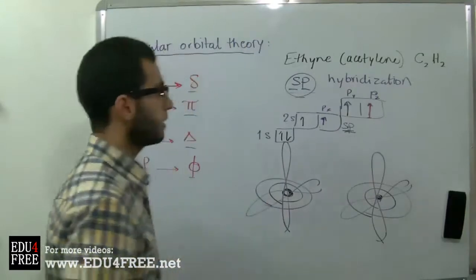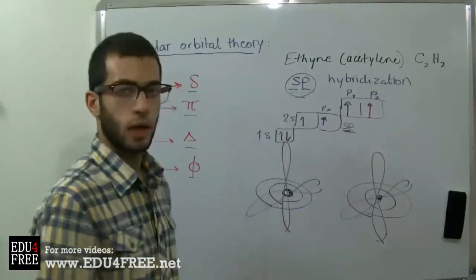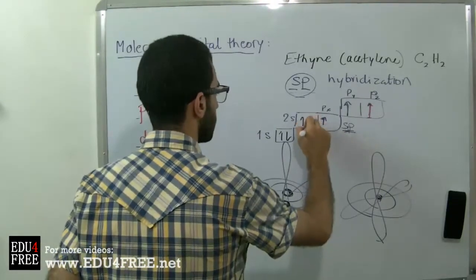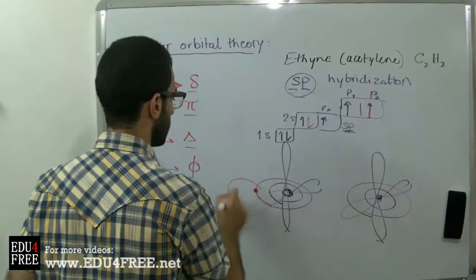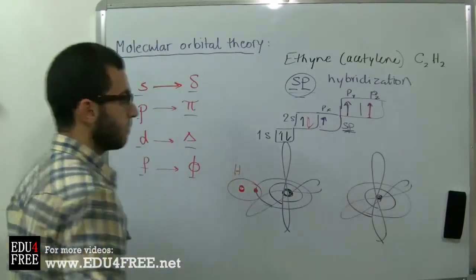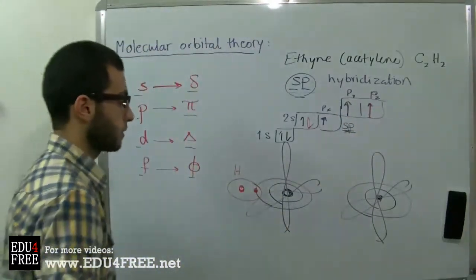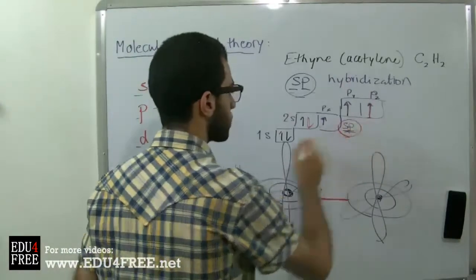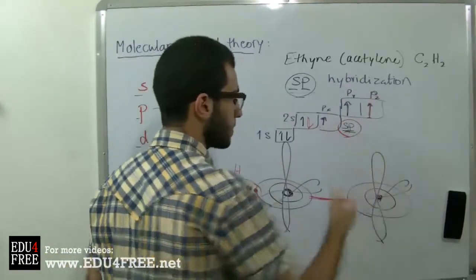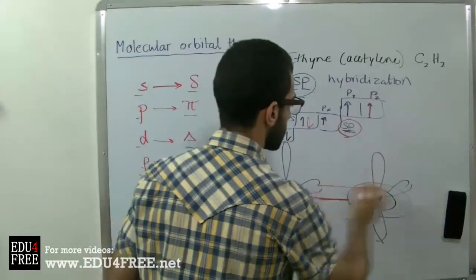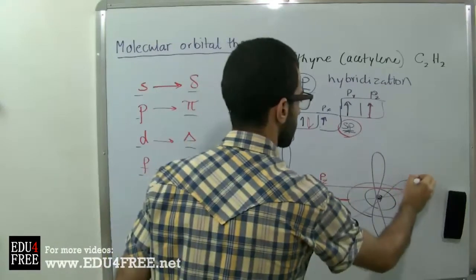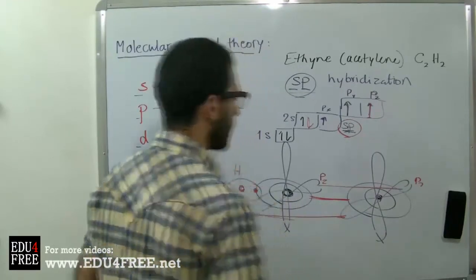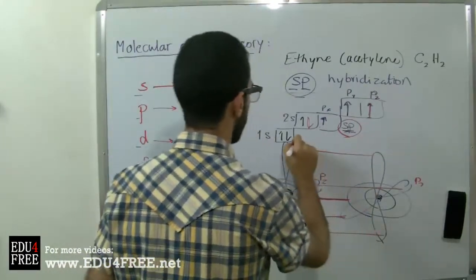Each carbon atom bonds with just one hydrogen atom, so an electron is added here by a hydrogen atom. With three vacant places remaining, a sigma bond is formed between the two carbon atoms via the hybridized SP orbital. The Py and Pz still each have a vacant place for an electron, so pi bonding takes place between the two Pz orbitals and also between the two Py orbitals.